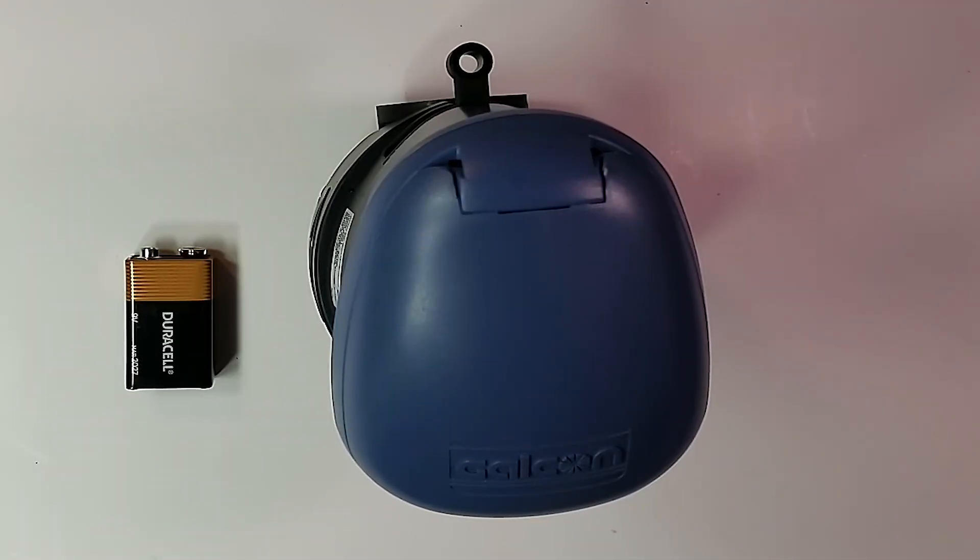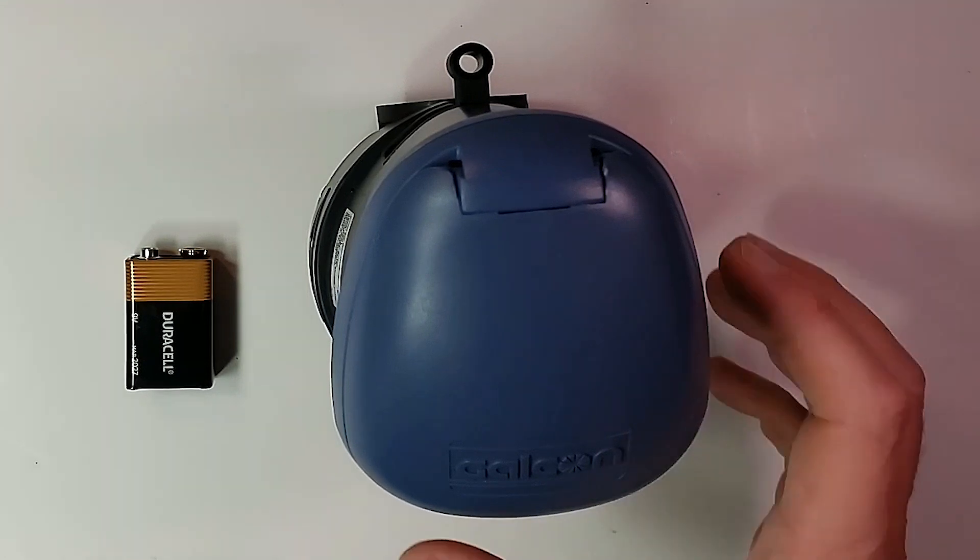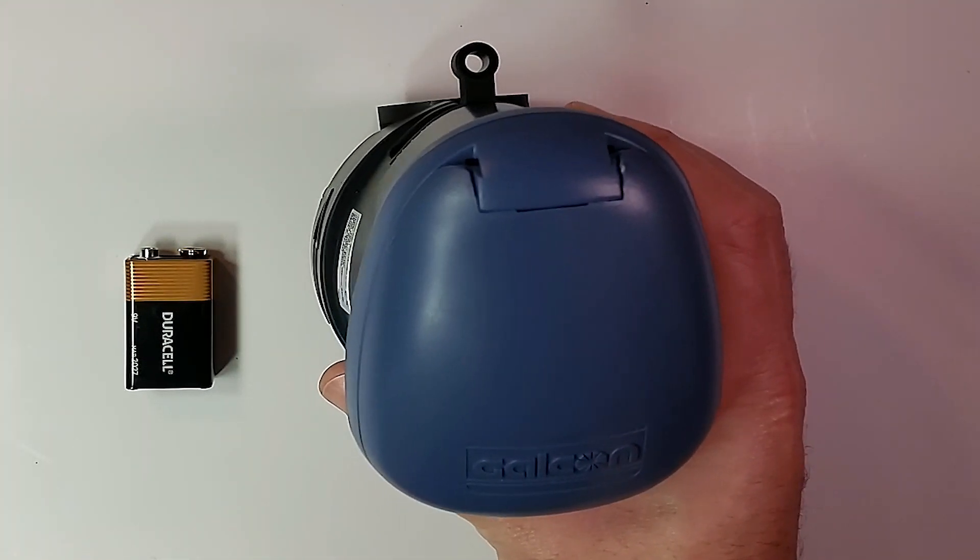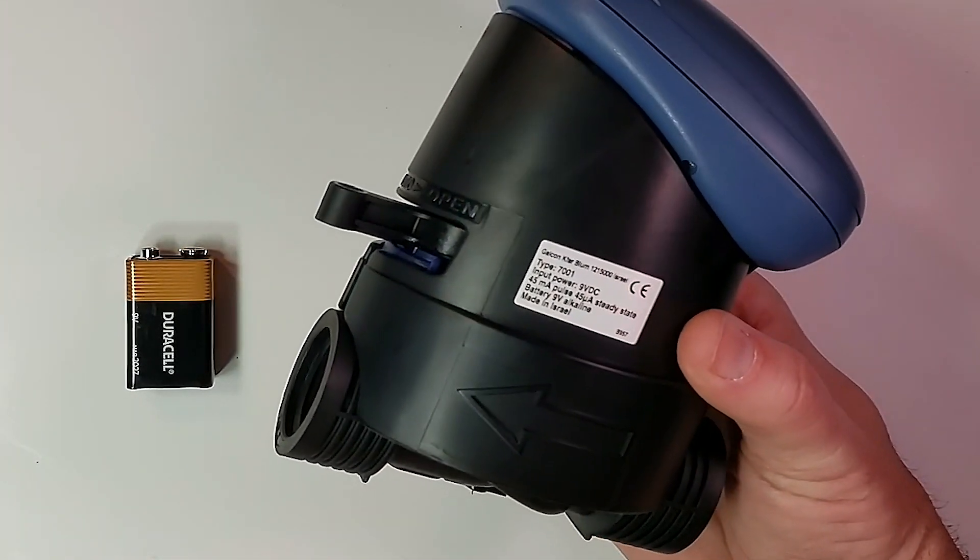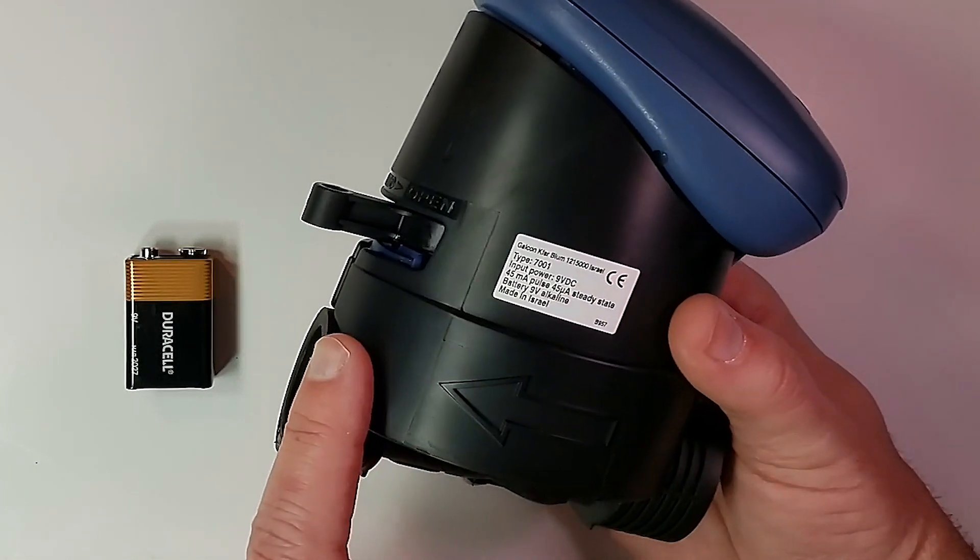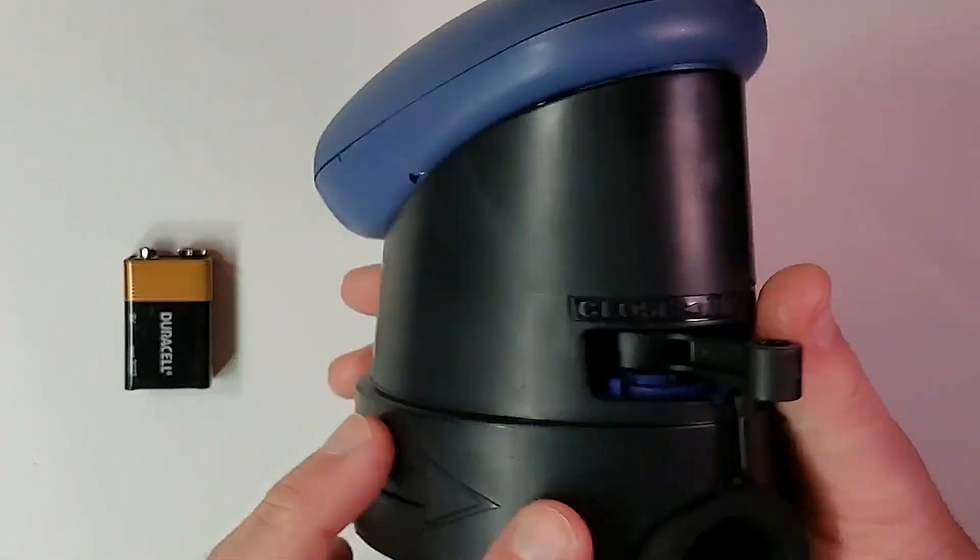Hi, today we are going to set up the 7000 series single valve controller from Galcon. A couple of features: you want to make sure that the water is flowing in this direction with the big arrow.